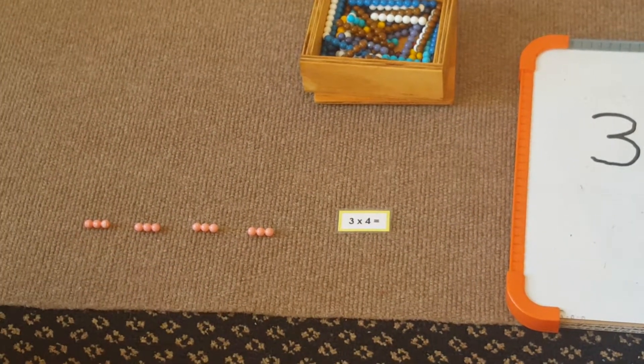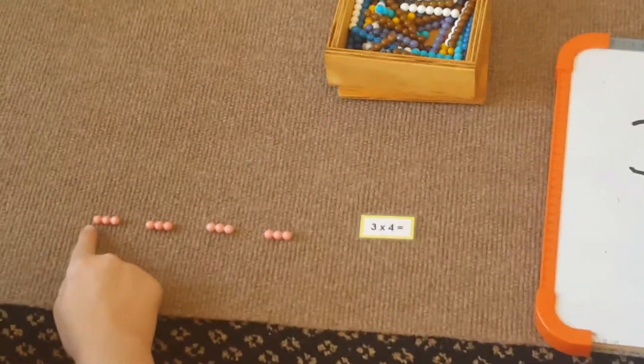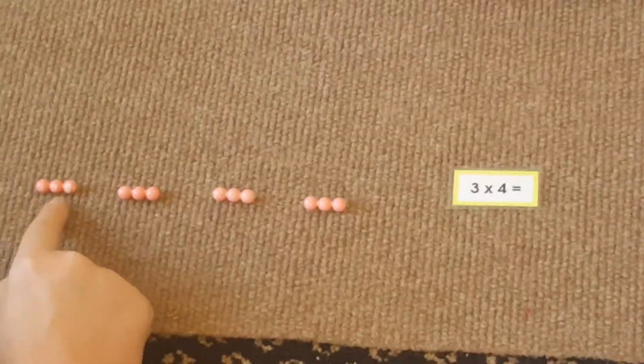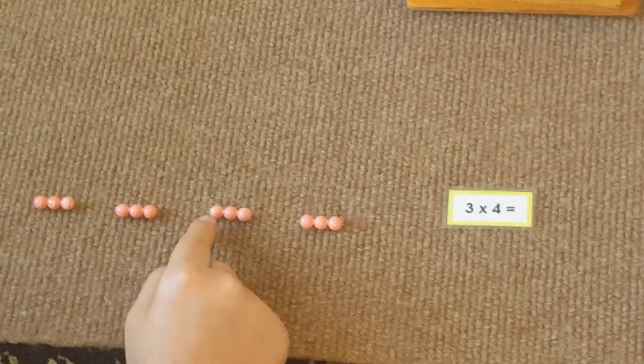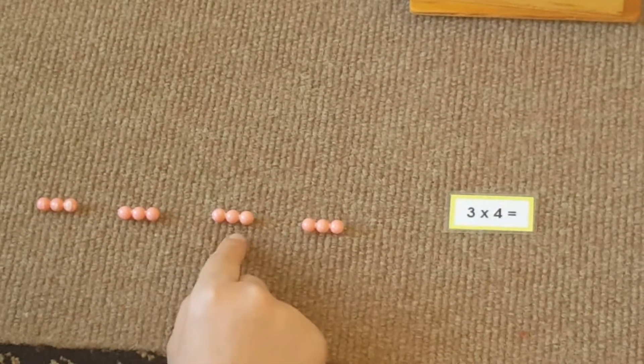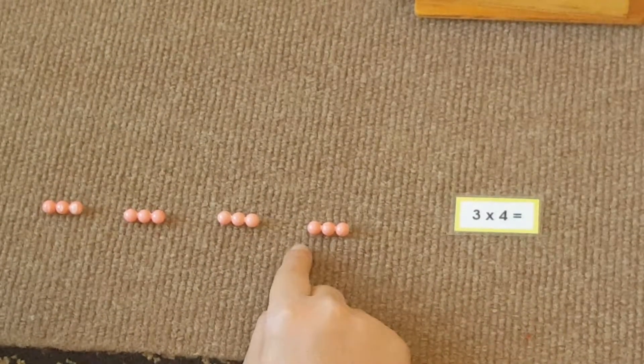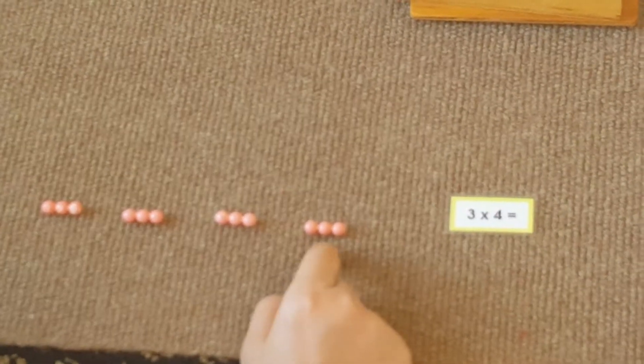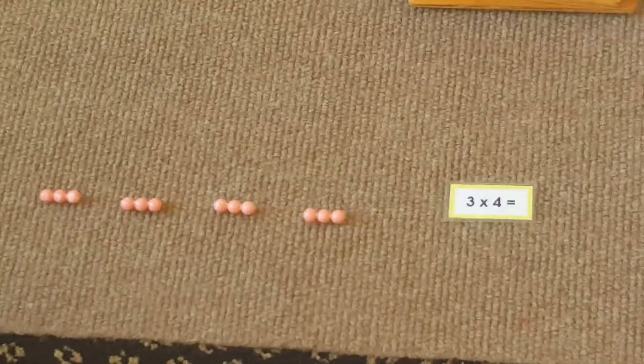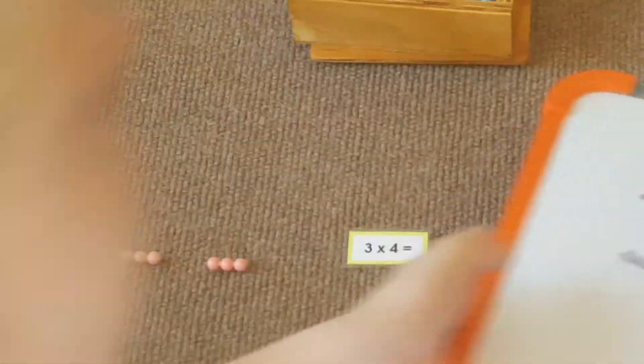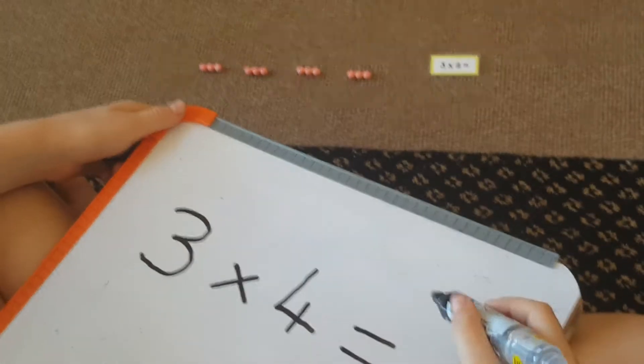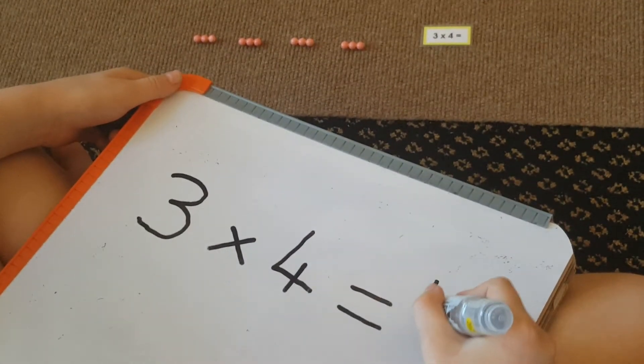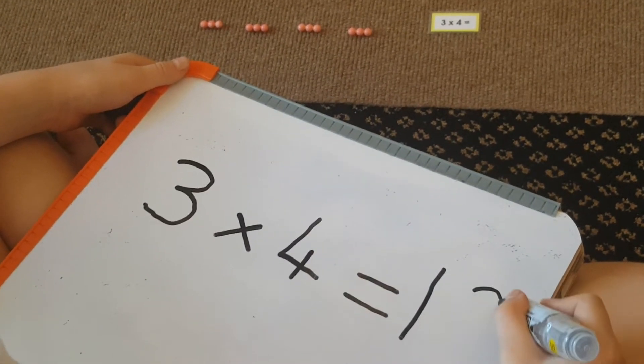Let's count the beads. One, two, three, four, five, six, seven, eight, nine, ten, eleven, twelve. Let's record your answer. Three taken four times equals twelve.